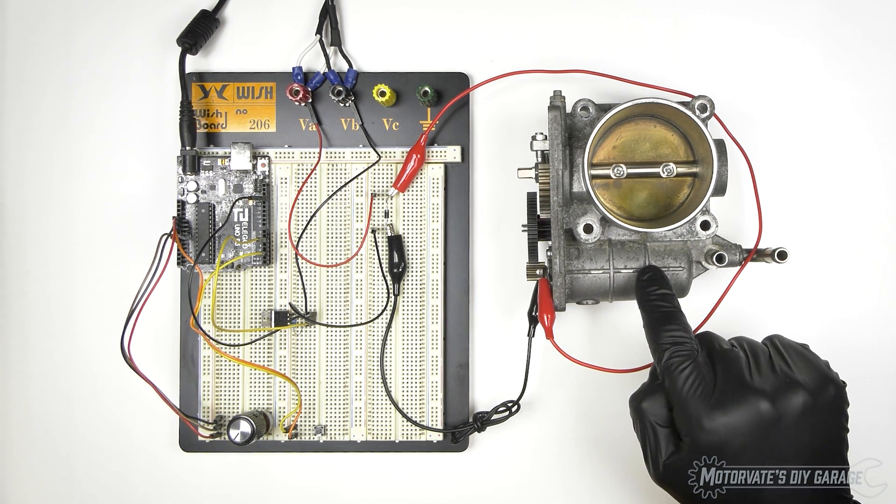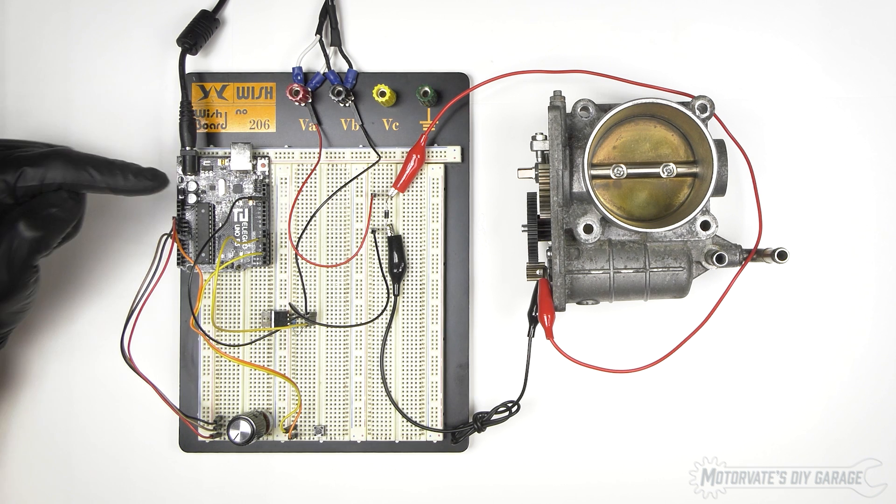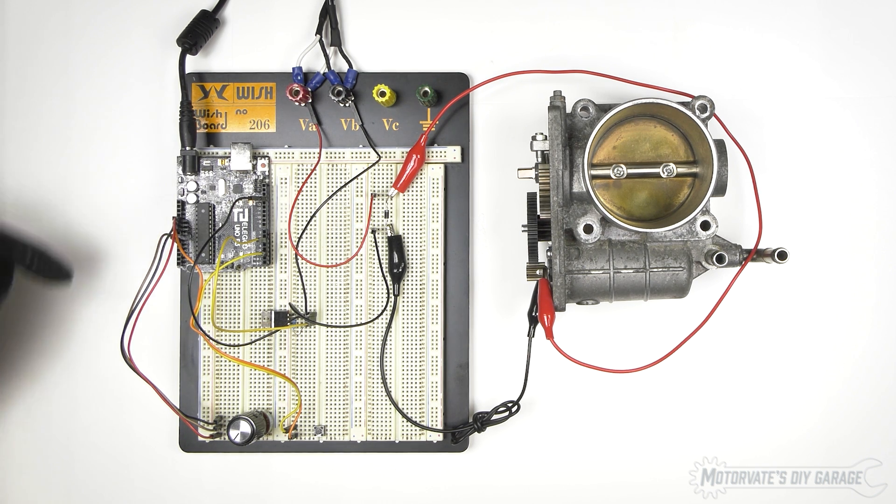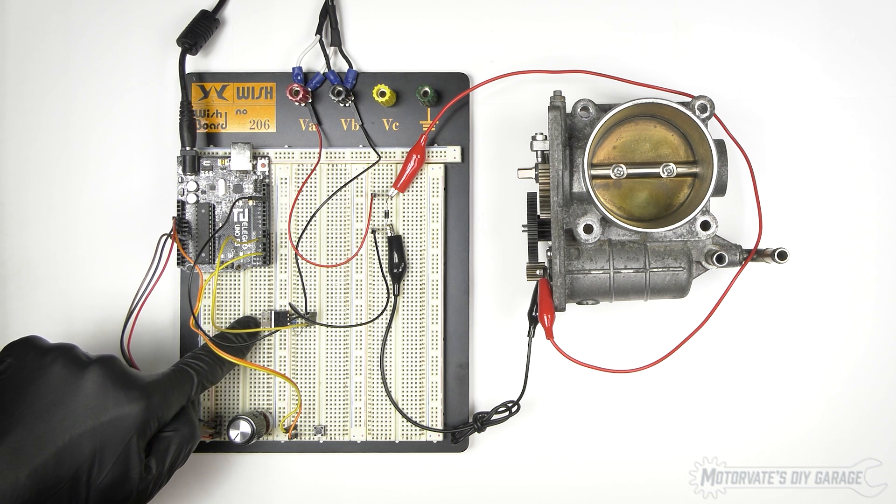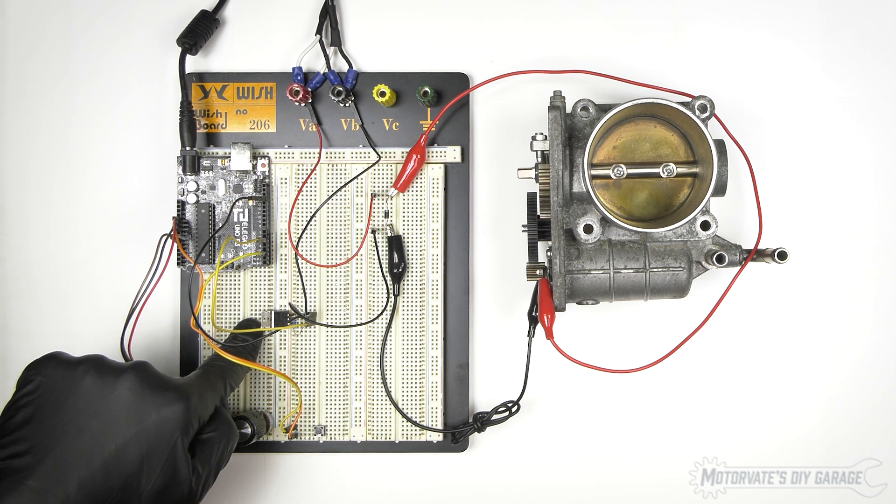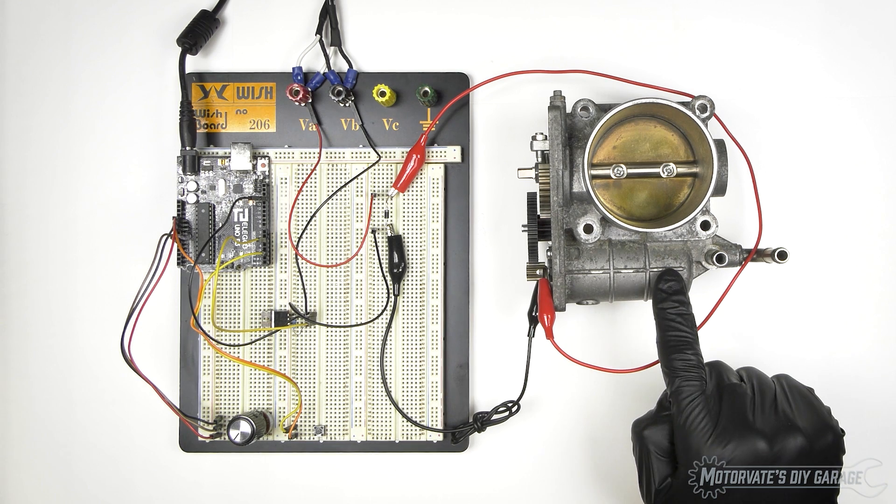Now, the motor in the throttle body takes a lot of power. More power than our ECU can switch. So, our ECU will then simply switch this electronic switch, called the MOSFET, and then the MOSFET will handle the heavy power requirements of the motor in our throttle body.